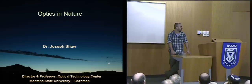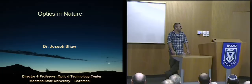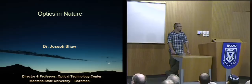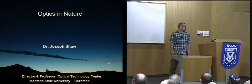Joseph was born in Alaska and did his PhD at the University of Arizona in Optical Science. He is now a professor at Montana State University working in the field of atmospheric optics and polarization. Today he will give us a lecture on optics in nature. You're welcome.